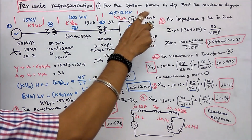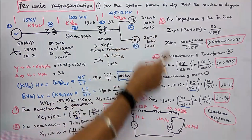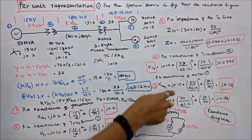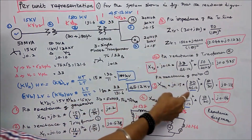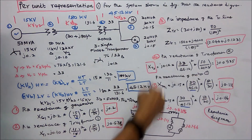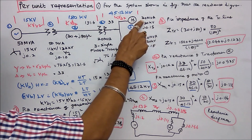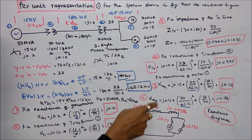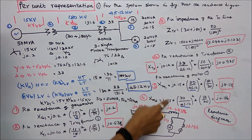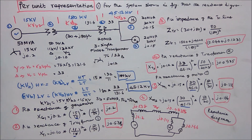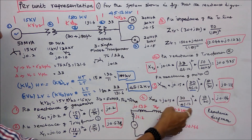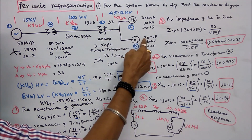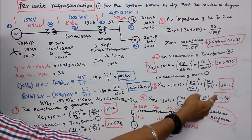Next is per unit reactance of motor 1, rated 30 MVA. Per unit equals J0.15 into (VB1/VB2) squared, that is (30/45.12) squared, times SB2 50 divided by given MVA 30. That equals J0.111. Similarly for motor 2, rated 20 MVA: J0.15 into (30/45.12) squared times 50/20. That equals J0.166.